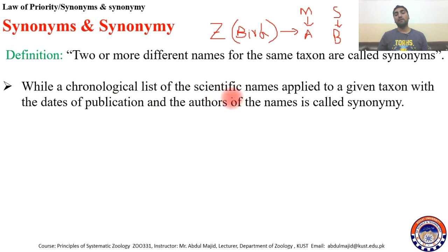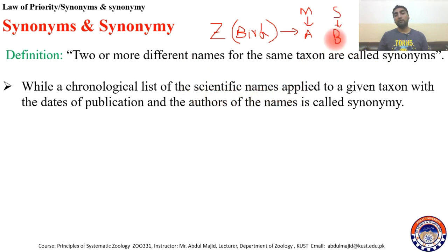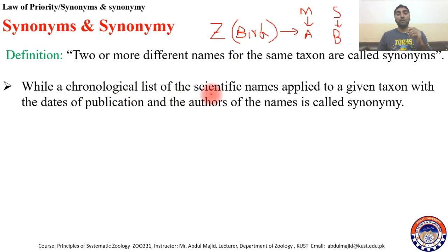A chronological list of the scientific names applied to a given taxon, with the dates of publication and the authors of the names, is called synonymy. If I make a list of these synonyms — writing the Z bird, then Muhammad and the name he gave with the date, then Sajjad with the name B and his date — this date-wise list in chronological order with all scientific names, publication dates, and authors is called synonymy. So synonyms are the different names for a single taxon, and the list of these with publications, authors, and names is known as synonymy.